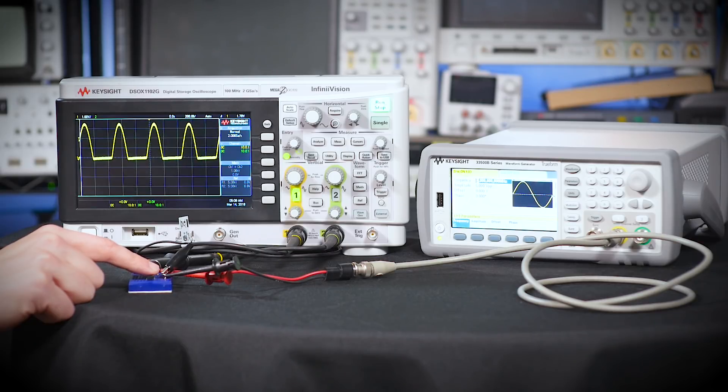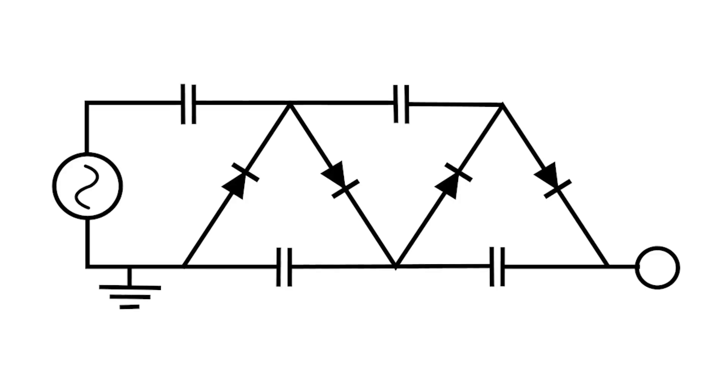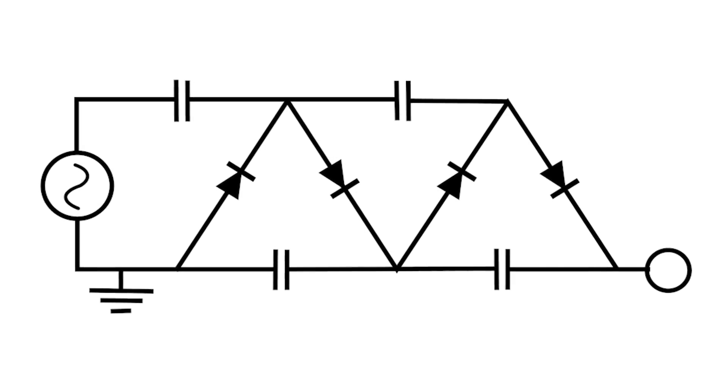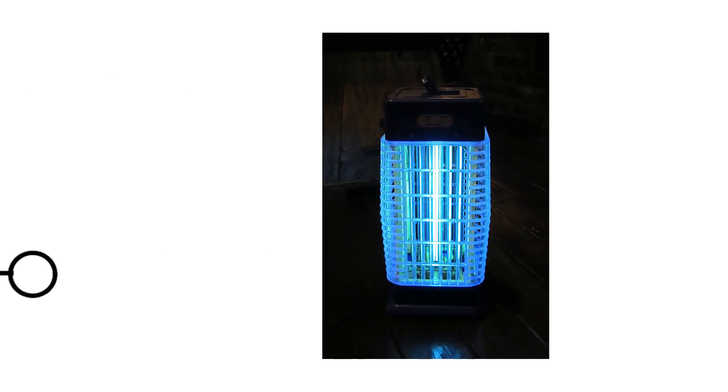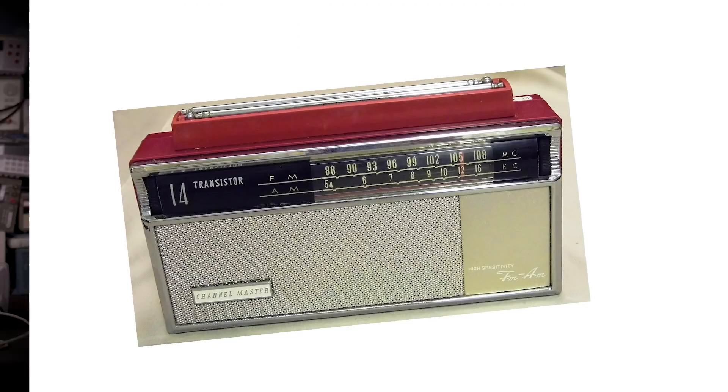Second, you can build a voltage multiplier, which is essentially just a bunch of half-way rectifiers in series. This is used for things that need high voltage but not a lot of current, like electric bug zappers and particle accelerators, which are basically the same thing, right? Rectifiers are also the backbone of original AM radios.